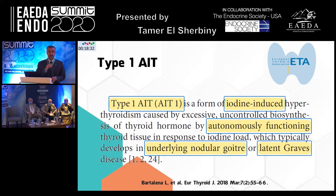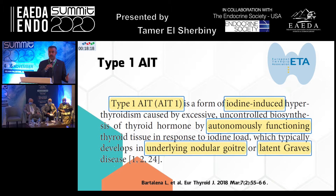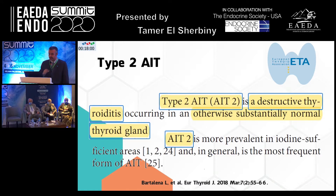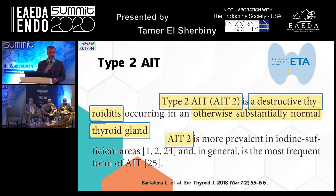We are going to comment on amiodarone-induced thyrotoxicosis. We have three types. Type 1 amiodarone-induced thyrotoxicosis is a sort of iodine-induced hyperthyroidism — excessive production of thyroid hormones from the thyroid due to an underlying cause. The patient has an underlying nodular disease or Graves' disease, and the excess iodine leads to severe thyroid hormone secretion. Type 2 amiodarone-induced thyrotoxicosis is a sort of destructive thyrotoxicosis — the thyroid is essentially normal but the excess iodine causes destruction and release of pre-formed thyroid hormones.